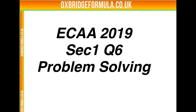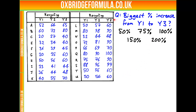This is question 6 on problem solving from section 1 of the 2019 ECHA. We're given information for many different countries — I've abbreviated the first letters of each country — and we're told how much in thousands of tonnes they recycle in years 1, 2, and 3. We're asked for the biggest percentage increase in recycling from year 1 to year 3 out of these five options.